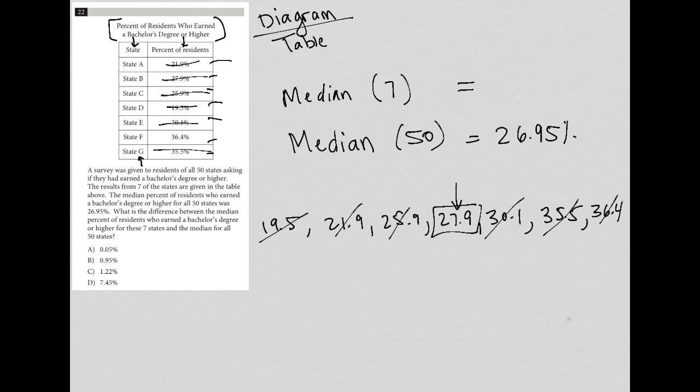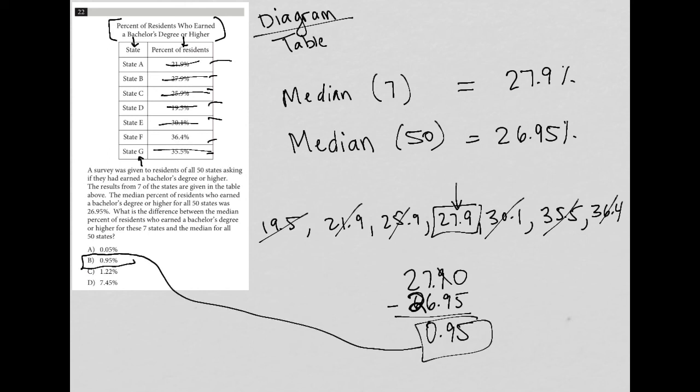So the median for the seven states here is 27.9%. And the question just wants us to find the difference between those two. So 27.9 minus 26.95. It looks like we're going to be exact, so I'm going to just put a zero here and do the math. This is the calculator section, so why not throw this into a calculator if you don't know it by heart? And even if you did know it, I would still suggest that you throw it into a calculator. So 27.9 minus 26.95 is, as expected, 0.95. And therefore, the correct answer is choice B.